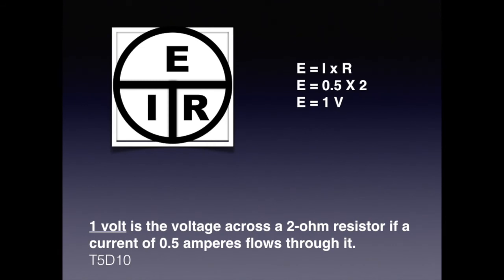In question T5D10, we are asked to solve for voltage given a current of 0.5 amps and a resistance of 2 ohms. Covering E on the chart, we see that E equals I times R. We plug in the values and multiply 0.5 by 2, giving us 1 volt. For the exam, know that 1 volt is the voltage across a 2 ohm resistor if a current of 0.5 amperes flows through it.